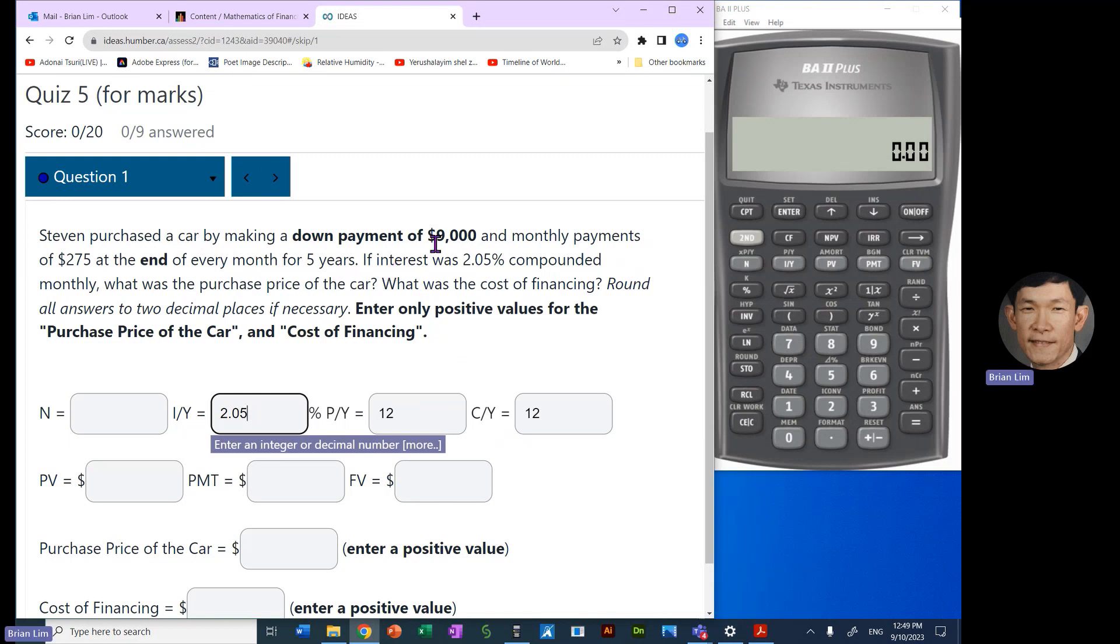Alright, now there is a down payment of $9,000. Monthly payments, $275. So let's put in the $275 in here. If you wish, you could enter with negative. Now the future value would be zero because we would like to purchase the car, so it should be paid off at the end. Now the present value is what we need to calculate, and then we will have to add this $9,000 to get the purchase price of the car.